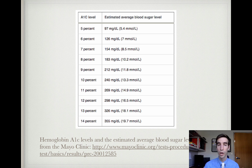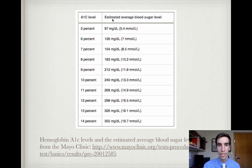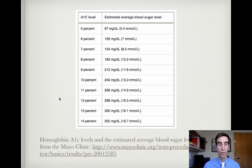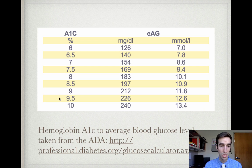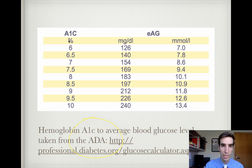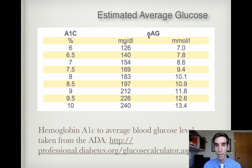I tried to develop my own formula that would closely approximate the hemoglobin A1c levels in the left column to the estimated average blood sugar levels in the right column. This chart is from the Mayo Clinic, put out to help with patient explanations of hemoglobin A1c to average blood sugar levels. There's a similar one from the American Diabetes Association, where hemoglobin A1c expressed as a percentage correlates to the estimated average glucose in milligrams per deciliter.